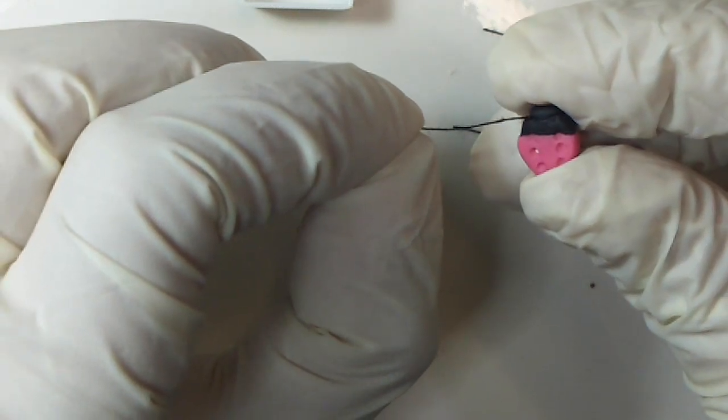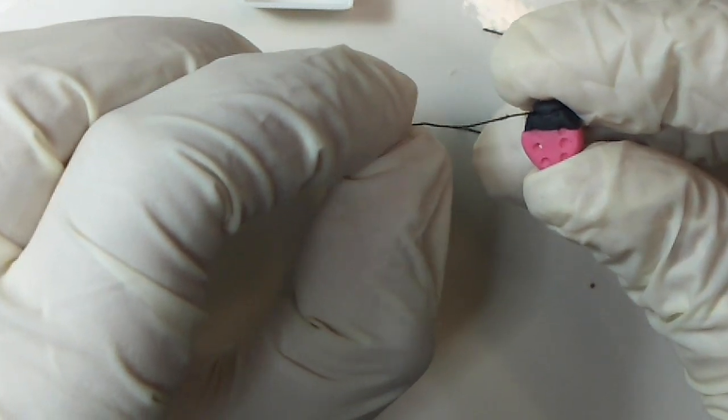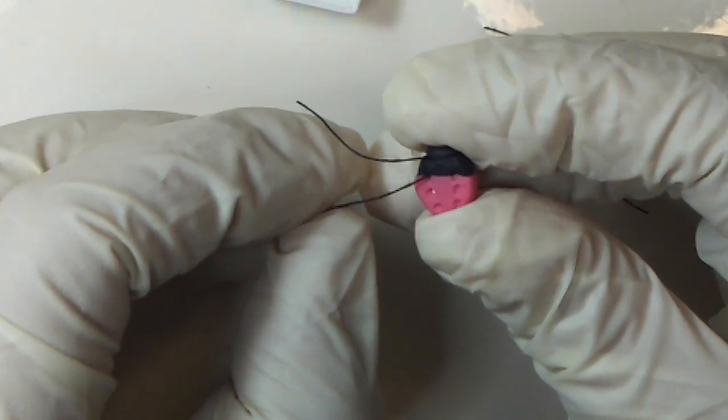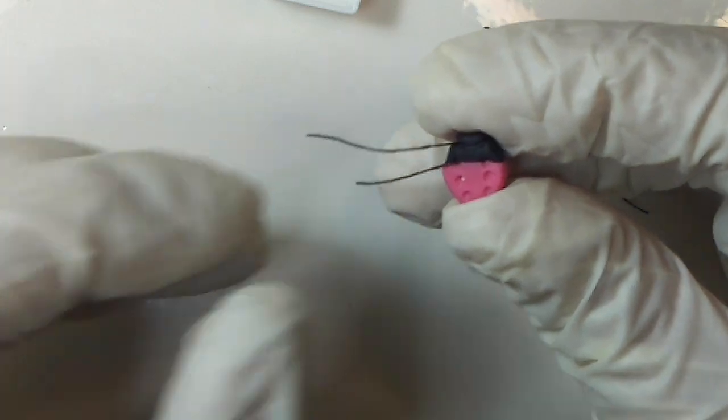Add the legs one at a time, carefully and slowly. Just take your time. If you try to rush this part, the legs will fall out and it'll get frustrating. So have patience and add them slowly.